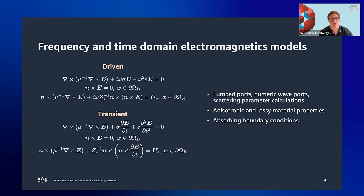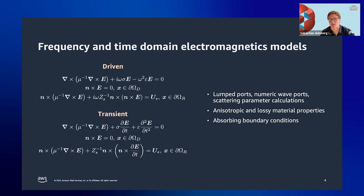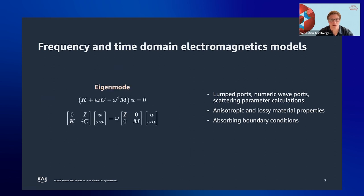A few features worth calling out beyond the main academic examples: lumped ports, useful for coupling to lumped circuits and computing microwave circuit properties like scattering, impedance, or admittance parameters (S, Z, Y matrices); numeric wave ports, which use MFEM sub-mesh capabilities to solve a 2D eigenvalue problem for a boundary mode used to excite the 3D model — useful for scattering parameter calculations; anisotropic and lossy material properties; and multiple classes of absorbing boundary conditions.